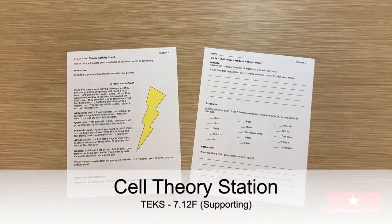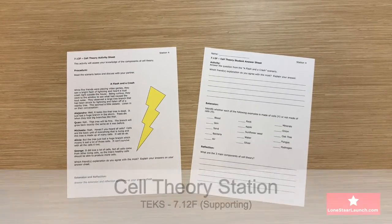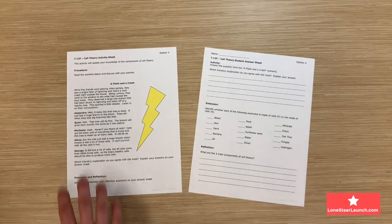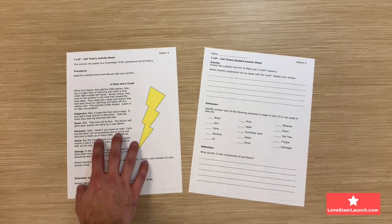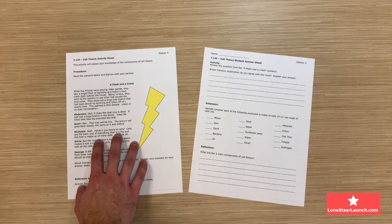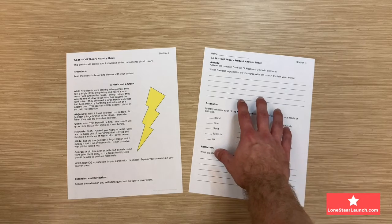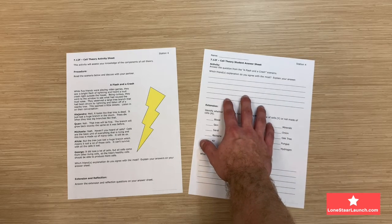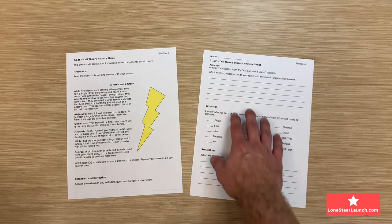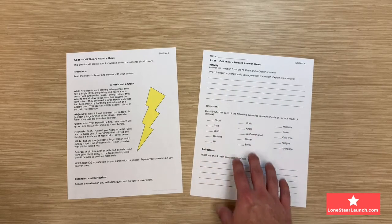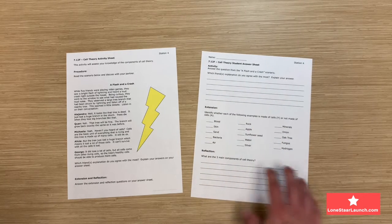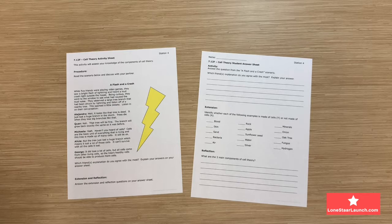This is cell theory, station activity 7.12f. On the left hand side you'll see the activity sheet with a scenario called a flash and a crash. On the right hand side you'll see the student answer sheet that contains an activity, an extension, and a reflection. This will travel with the student as the stations are completed.